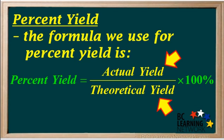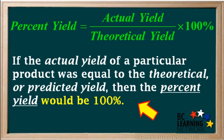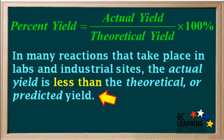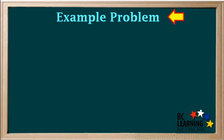The actual yield and theoretical yield must be in the same unit. Usually grams are used, but kilograms or even moles may also be used, as long as they're the same. If the actual yield of a particular product was equal to the theoretical or predicted yield, then the ratio of actual to theoretical yield would be one to one, so the percent yield would be 100%. However, in many reactions that take place in labs and industrial sites, the actual yield is less than the theoretical or predicted yield. In these cases, the percent yield is less than 100%.